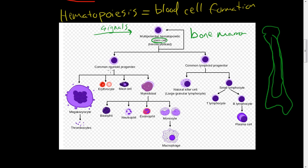The common myeloid progenitor is created from this stem cell. This myeloid progenitor can first be turned into a megakaryocyte, and then little chunks of that megakaryocyte get detached, creating thrombocytes. Thrombocytes are platelets that help stop bleeding — when we get a cut, instead of bleeding indefinitely, we form blood clots, and platelets are involved in that.